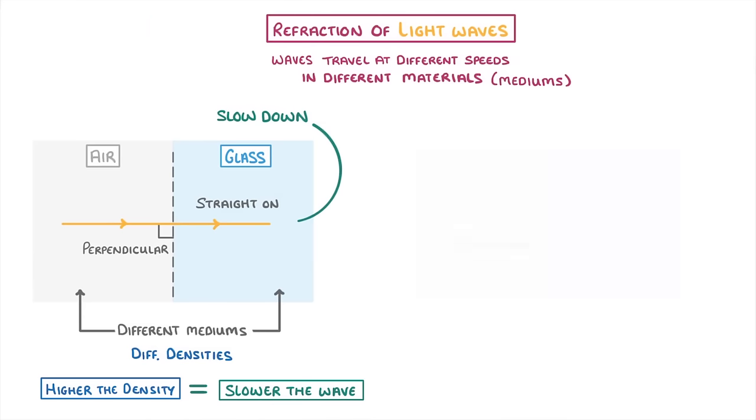However, if it hits the boundary at an angle, like in this case, then it will be refracted, which means that its direction will change. If it's passing into a more dense medium, like it is here, because glass is more dense than air, then it will bend towards the normal.